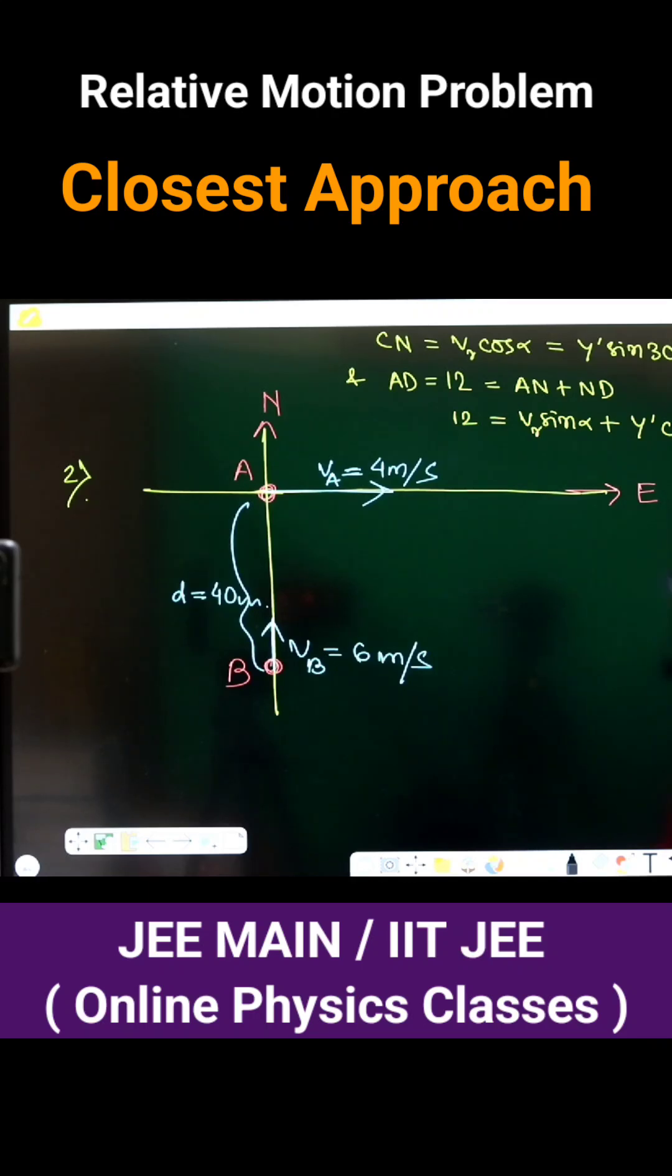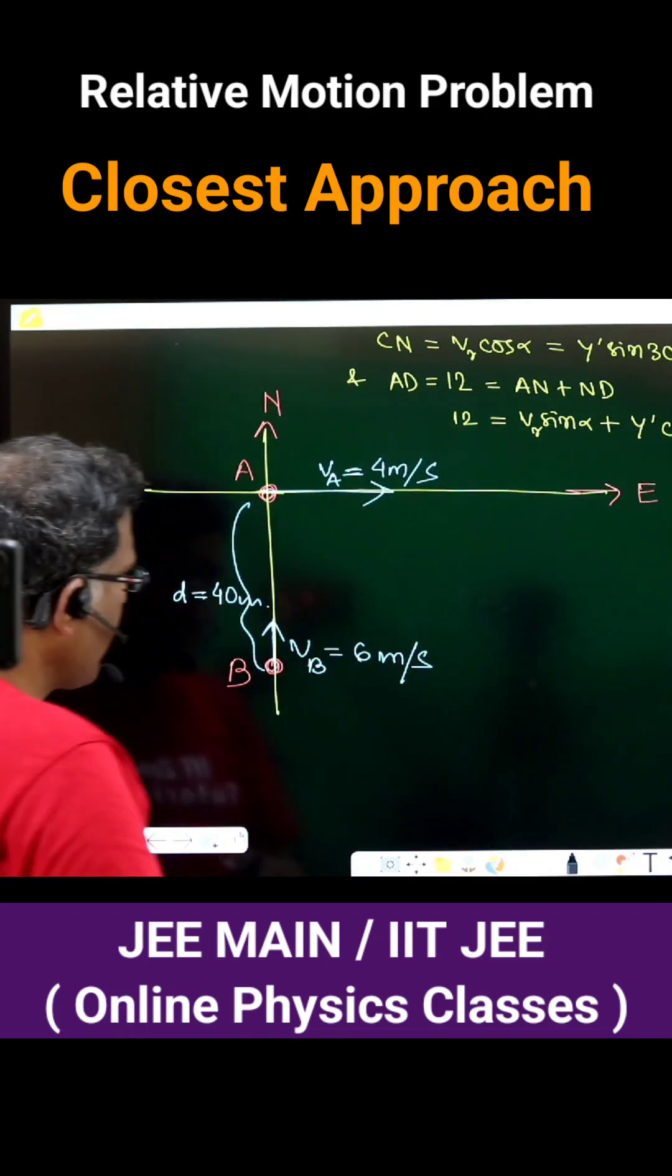B is located due south of A and heading towards north. At that initial instant, A is going east, B is going due north. Initially they are 40 meters apart.